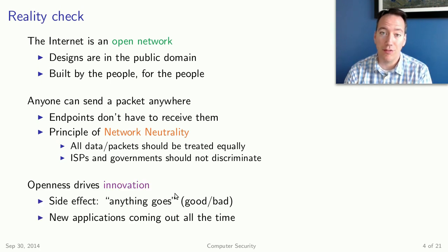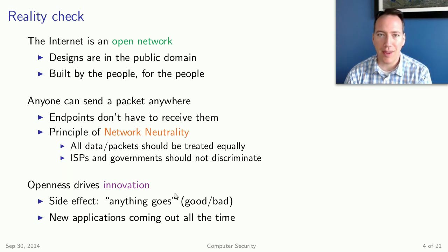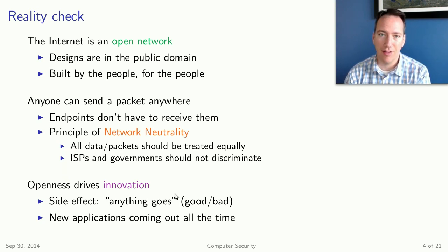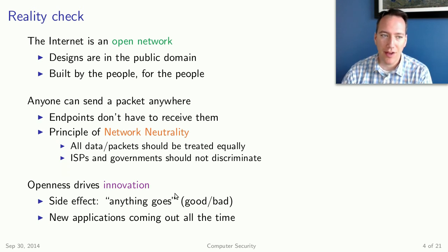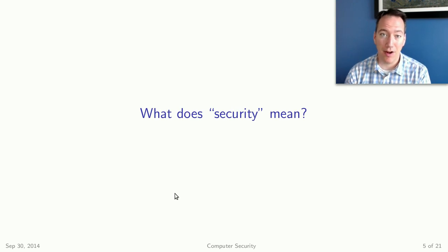And this openness is what has driven innovation. A lot of new applications have come up in the last 10, 15 years — everything ranging from Google, Facebook, Twitter, Amazon, and so forth — because of this openness. New applications are coming out all the time because nobody has to pay a royalty fee in order to innovate on the internet. So what does security mean in this type of environment?